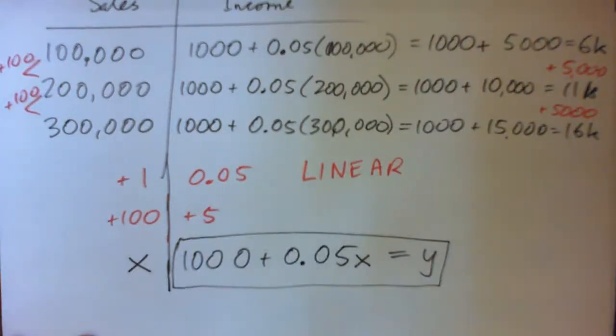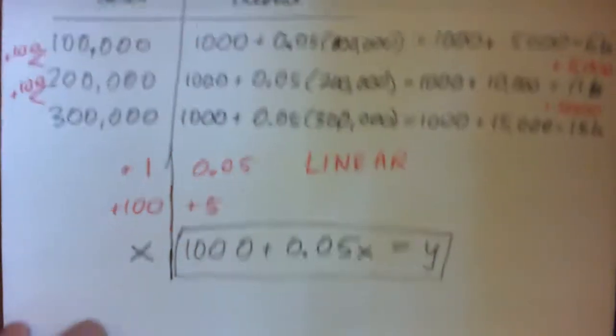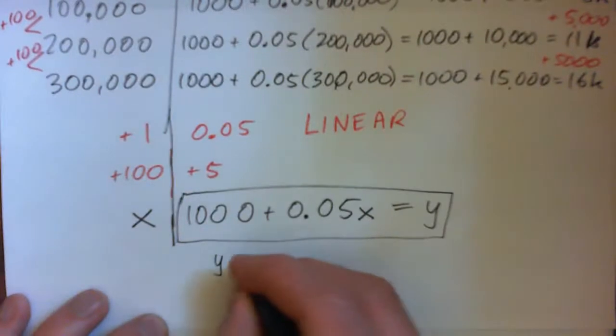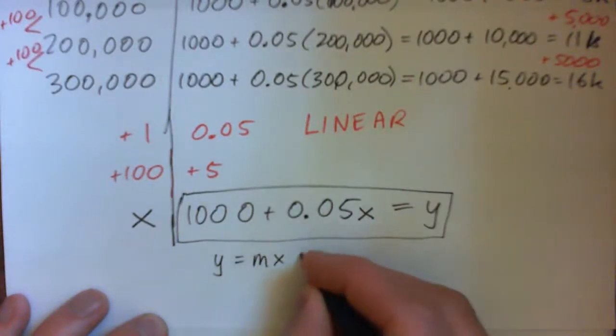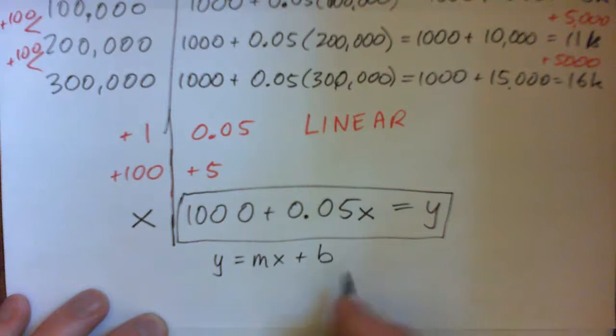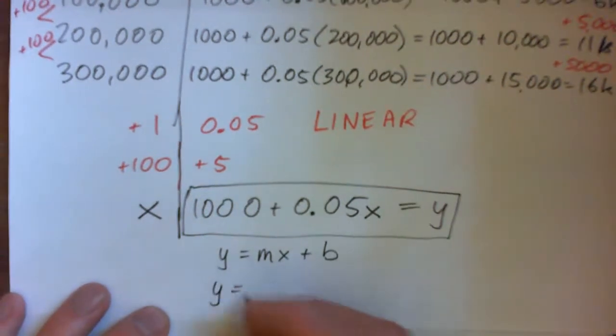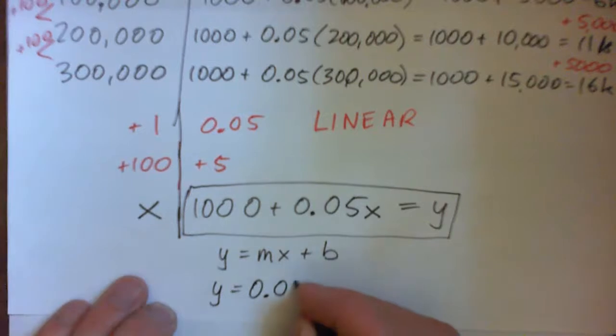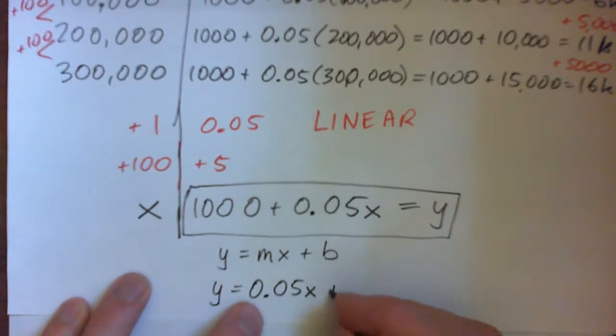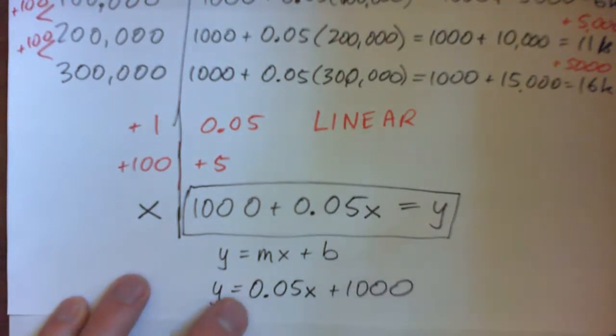Just for fun, everyone notice that this is Y equals MX plus B, the linear form of a straight line that we've seen in algebra. So like Y equals 0.05 times the input plus the Y-intercept of $1,000. Does that make sense?